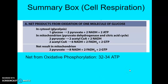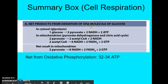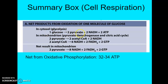Here's our summary of the net products from oxidation of one molecule of glucose. In glycolysis, we take one molecule of glucose as input, and output is two pyruvate, two NADHs, and two ATPs. In pyruvate oxidation, two pyruvates go in and two acetyl-CoAs and two NADHs come out. From the citric acid cycle, the inputs are two acetyl-CoAs, and the outputs are six NADHs, two FADH2s, and two GTPs.